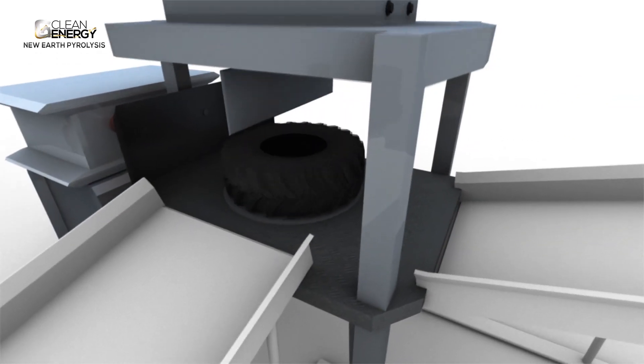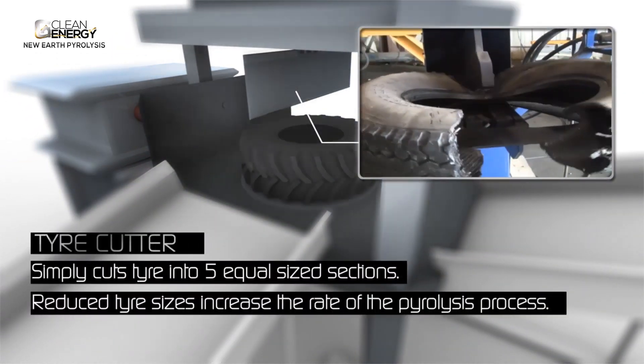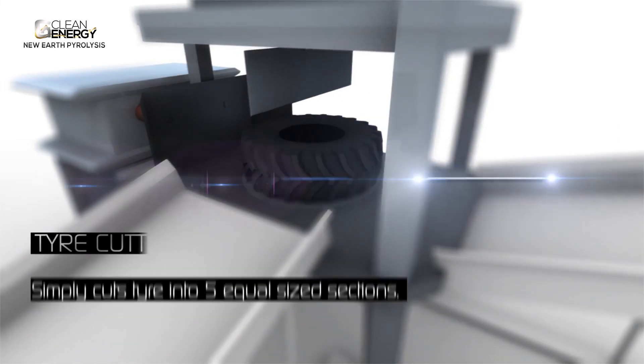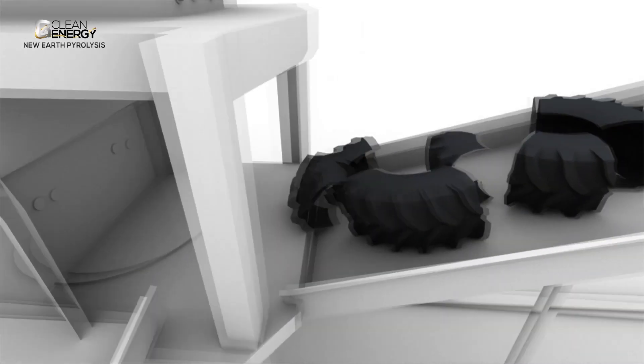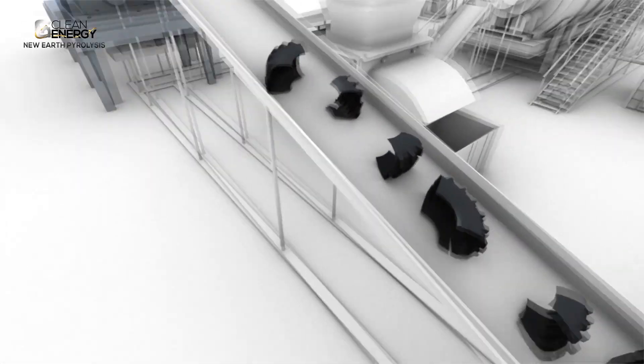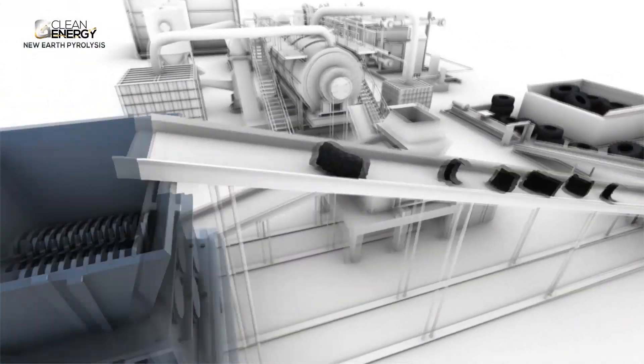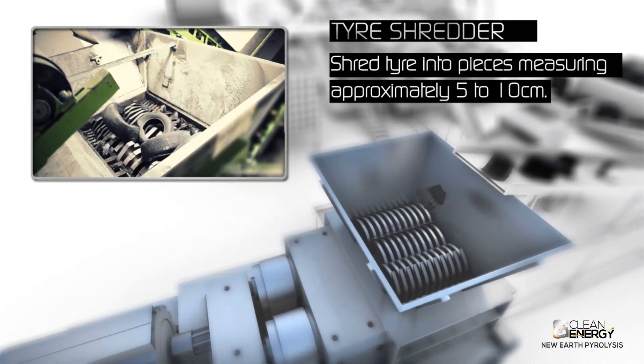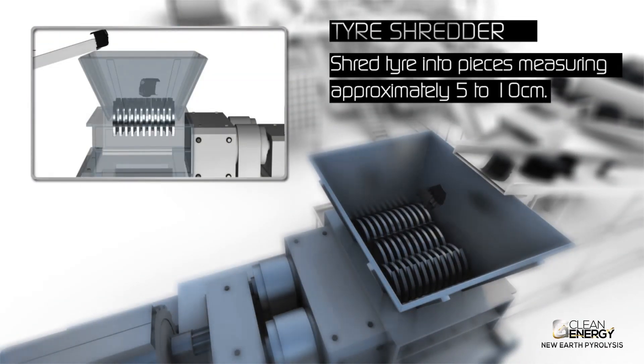Reduced tyre sizes and pieces increase the rate of efficiency in which the tyres can be loaded and play a fundamental role in increasing the speed of the overall pyrolysis process. The tyres are typically cut into four to five pieces and then travel via conveyor belt and are shredded into pieces measuring approximately five to ten centimeters.